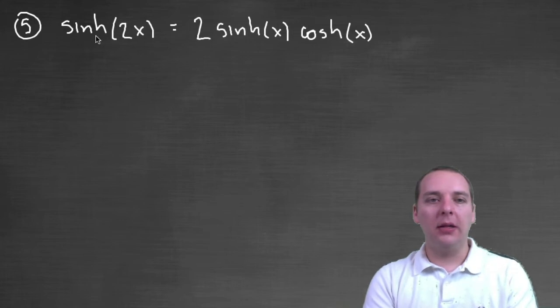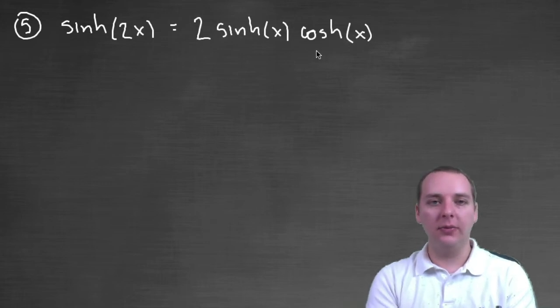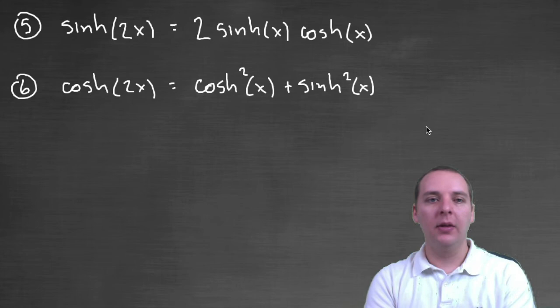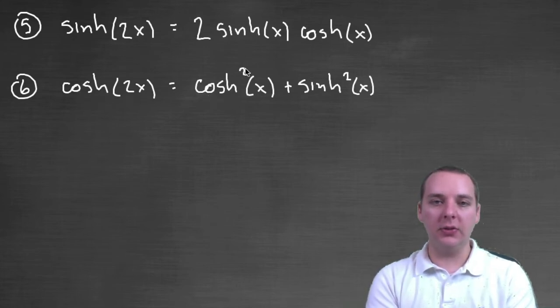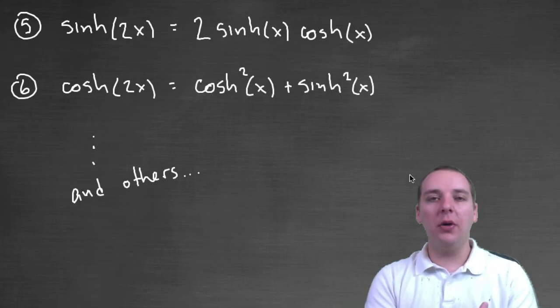Hyperbolic sine of two x equals two hyperbolic sine x times hyperbolic cosine of x. This very closely resembles a trig identity. Hyperbolic cosine of two x equals hyperbolic cosine squared plus hyperbolic sine squared of x. And there's a few others. The six that I've listed are what I would call the main ones, the main hyperbolic identities that we should know.